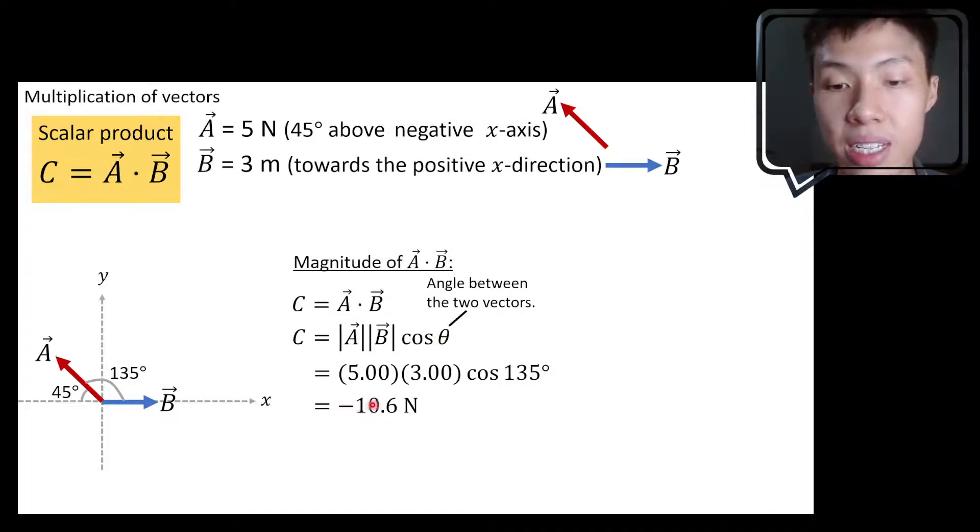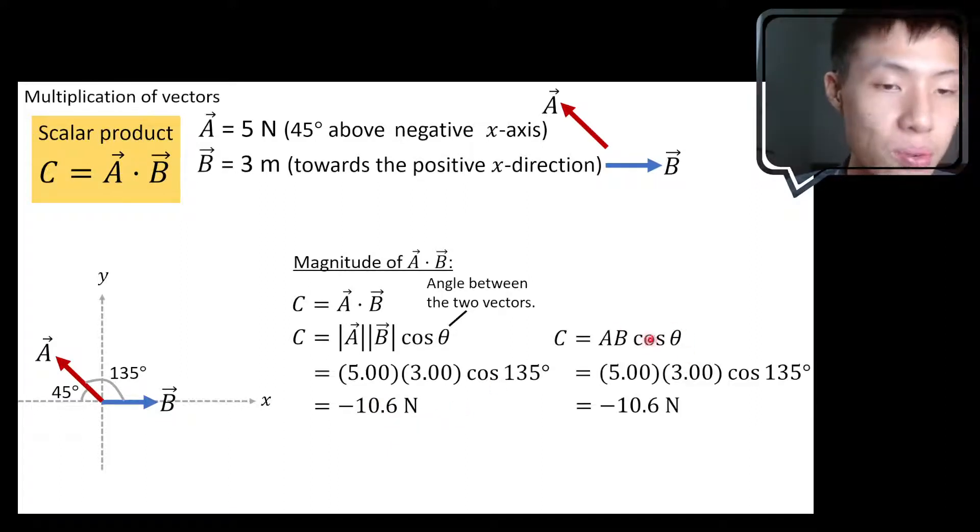So if you calculate it, you get an answer negative 10.6 Newton. So of course you can also write it another way, you can just omit the right arrow and the modulus because you just represent it as magnitude of A, magnitude of B cos θ. So you still get the same answer, you can write it either this way or you can write it this way. Both are accepted.